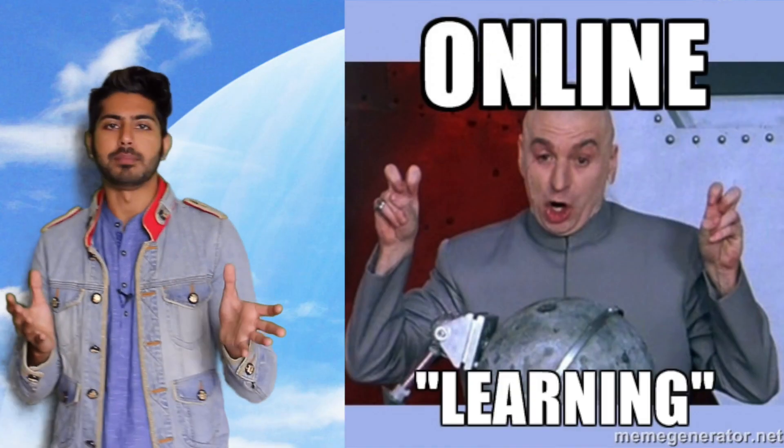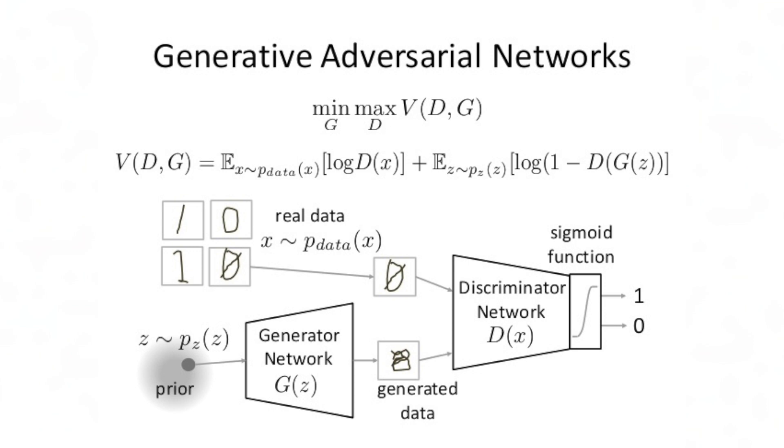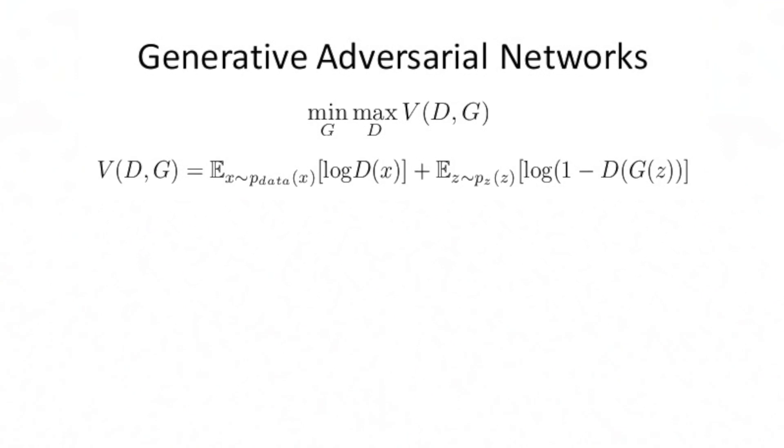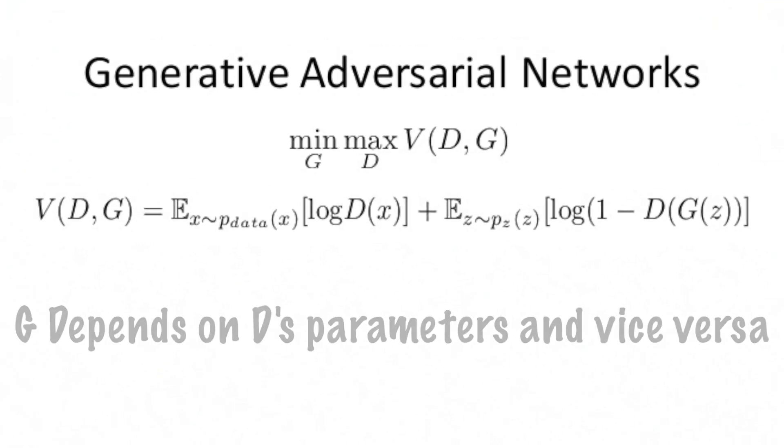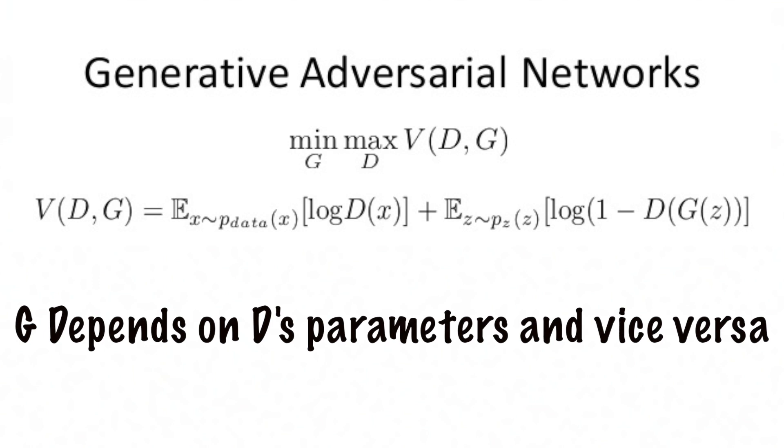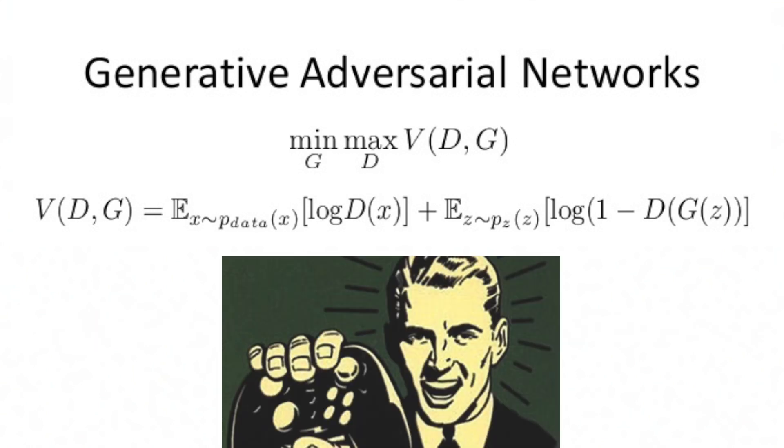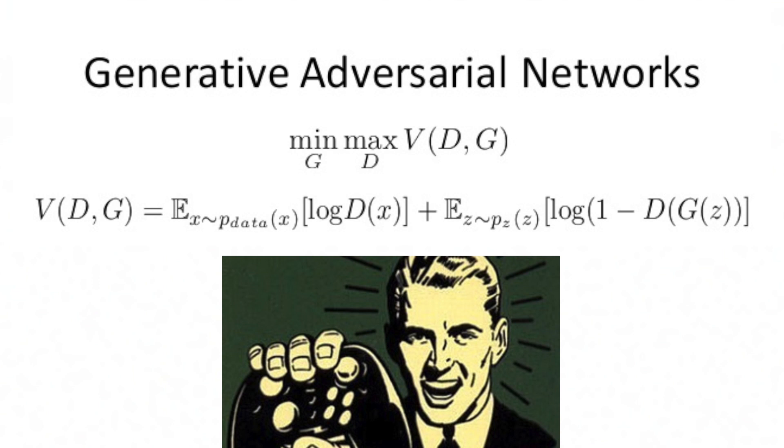So how do we train this thing? The goal of training our discriminator is to maximize D of X for every image from the true data distribution, and minimize D of X for every image not from the true data distribution. The goal of training the generator, G of Z, is to create samples that fool D. We train both D and G by taking the gradients of this expression with respect to their parameters. Because each player's cost depends on the other player's parameters, but each player cannot control the other player's parameters, this scenario is most straightforward to describe as a game, rather than an optimization problem.